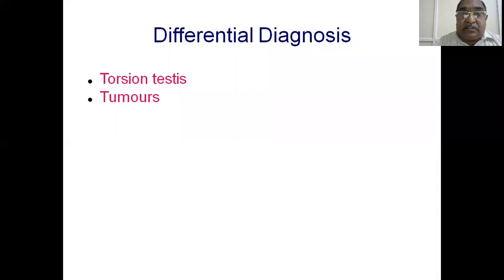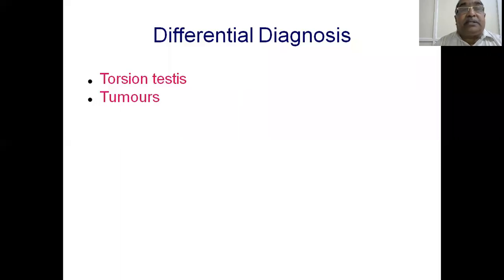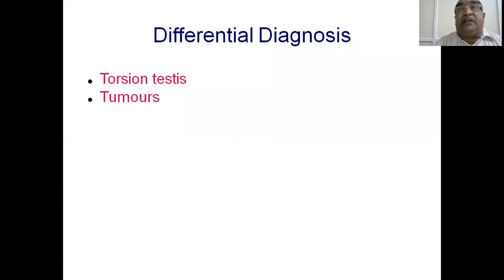Differential diagnosis: all cases presenting with acute pain in the scrotal region must be considered carefully. The key differentials are testicular torsion — a surgical emergency — a small strangulated hernia — also a surgical emergency — torsion of a testicular appendage, and trauma to the testis. None of these have systemic symptoms like fever with chills. Testicular tumors are sometimes confused, as minor trauma may cause bleeding into a previously painless swelling, producing sudden onset pain and swelling.